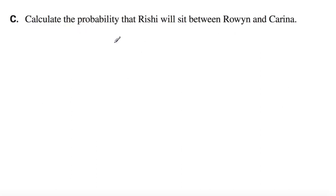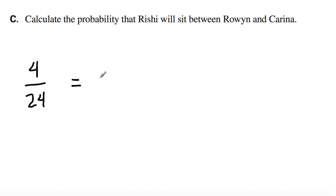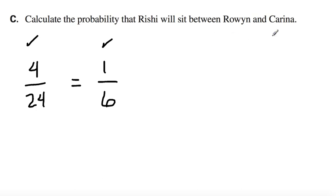Next one. Calculate the probability that Rishi will sit between Rowan and Karina. We have four favorable outcomes out of twenty-four possible outcomes. If you work it out, that fraction reduces to one in six — so Rishi has a one in six chance of sitting between Rowan and Karina. There is your fraction in lowest terms.